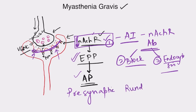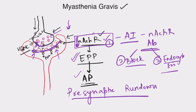Physiologically, something happens known as pre-synaptic rundown. When the neuromuscular junction is repeatedly stimulated throughout the day, these vesicles are continuously fusing to the membrane and releasing acetylcholine. Due to this repeated activity, the number of vesicles decreases and the amount of acetylcholine that can be released also decreases.